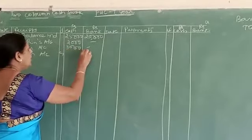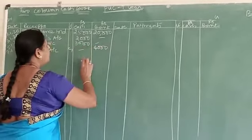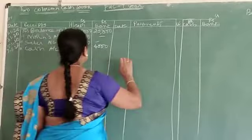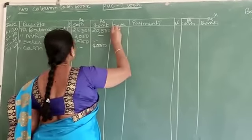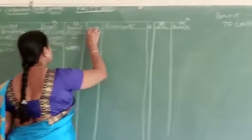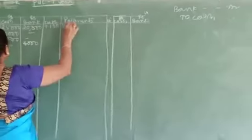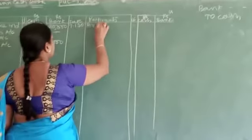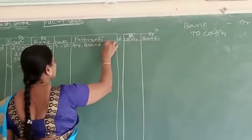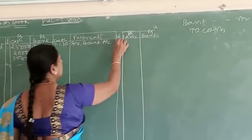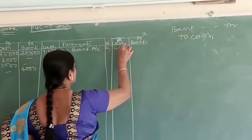Come to the credit side of the cash account. Cash account is credit. Write by bank account, write it as C1, 4,000.